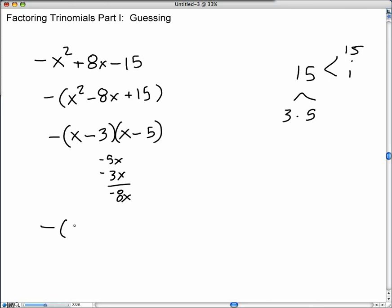So again, we can write out the answer with three factors, or we can multiply this negative out to one of these factors, and it's going to be negative x plus 3 times x minus 5.